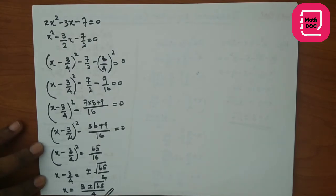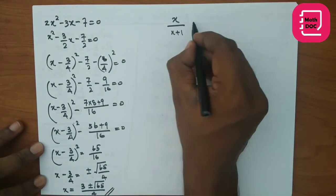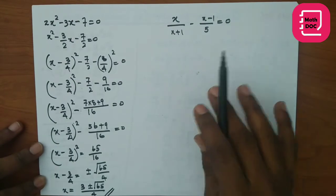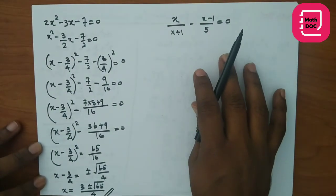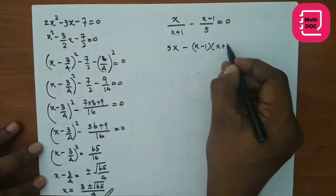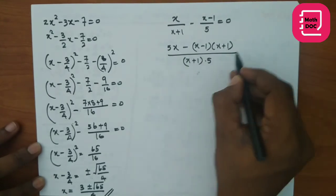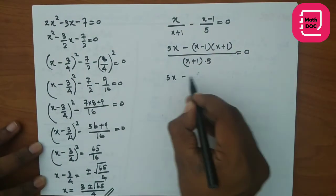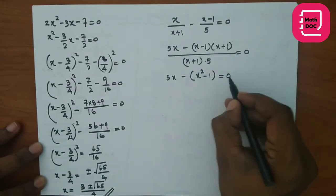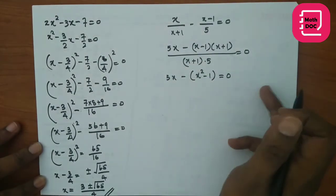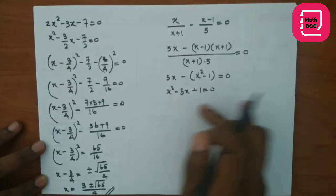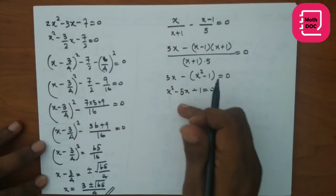Let's do another example: x/(x+1) - (x-1)/5 = 0. Here we can't see the quadratic pattern directly, but by simplifying we can obtain a quadratic equation. First get a common denominator: 5x - (x-1)(x+1) over (x+1)×5 = 0. Then 5x - (x² - 1) = 0. Multiplying out the denominator, we take all terms to one side: x² - 5x - 1 = 0. Now we can see the quadratic pattern.